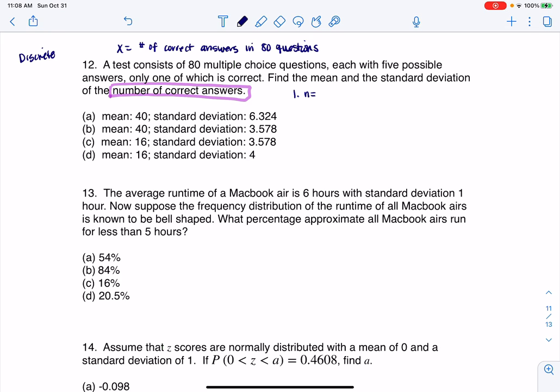I do have a fixed number of trials. I'm going to take 80 questions on that exam. I do have something I can deem a success. That means I get a correct answer because that's what we're keeping track of here. I'm going to go ahead and say that the trials are independent. Whether or not I get one answer correct has no effect on whether I get the next one correct.